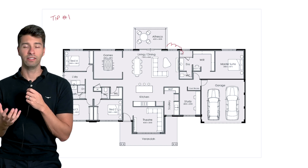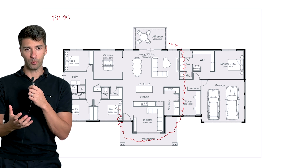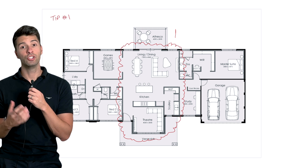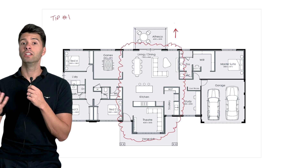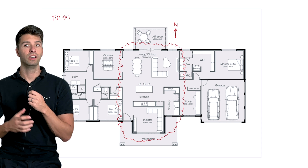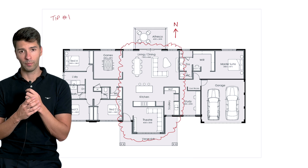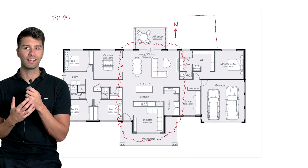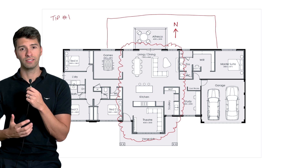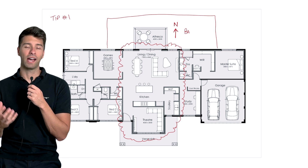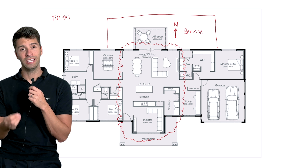First of all, your main living areas need to be positioned appropriately. The first thing you need to consider is solar passive design, and you need to consider your specific location. If you're in the Northern Hemisphere, just reverse everything I say for this section. If you're in the Southern Hemisphere, you want your living areas to be north-facing. As the sun rises and sets, it's predominantly on the north side of your property, so you want that sun to be heating up those living spaces and getting some passive heating in the main areas.